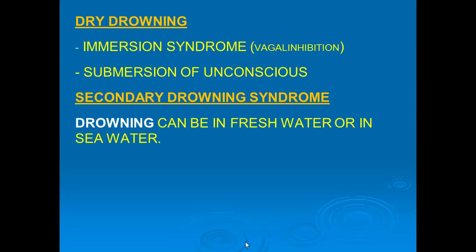Another type of atypical drowning is submergence of an unconscious person — when the person is unconscious because of an epileptic attack, intoxication, ischemic heart disease, or head injury, and he falls in water. Then entry of fluid into the air passages will be very slow, and we will have modified findings. This is also an atypical type of drowning.